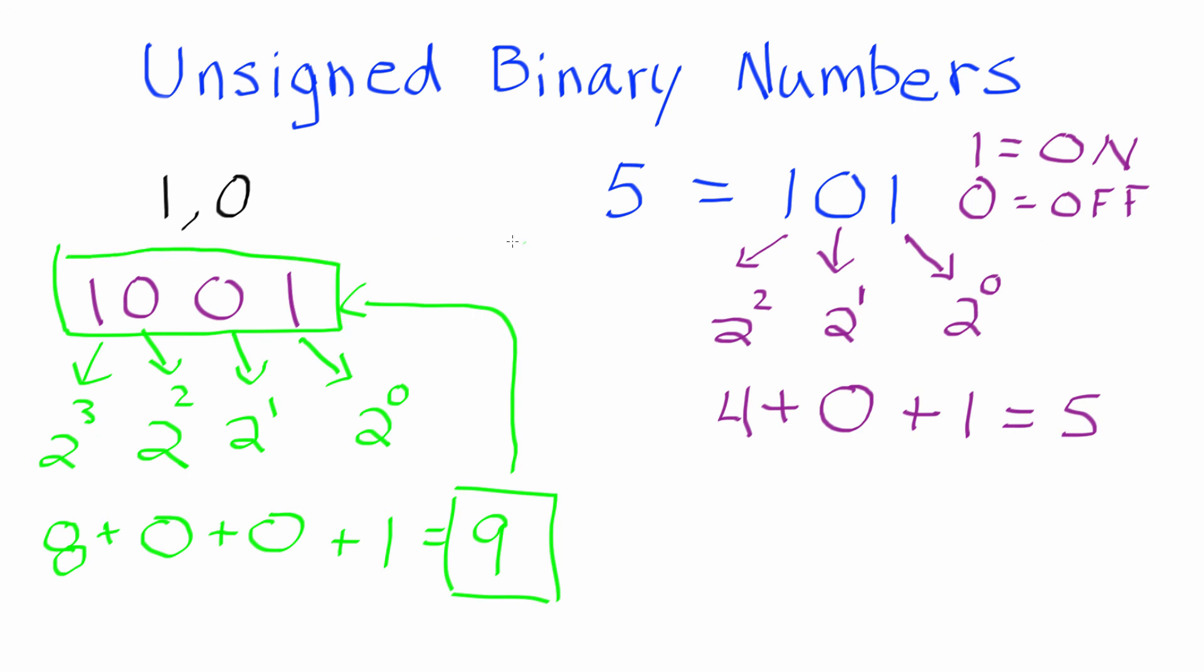If we want to represent the number 5 in unsigned binary notation, we simply write 1, 0, 1. So anyway, there were a couple examples of how you can convert whole numbers into unsigned binary numbers.